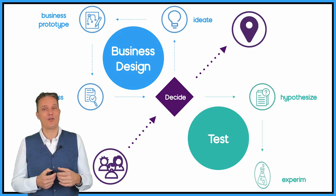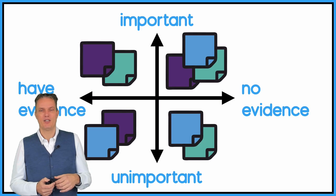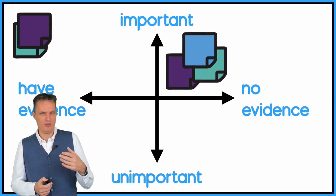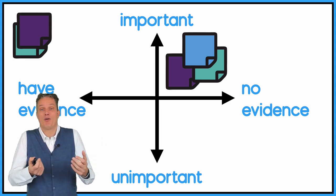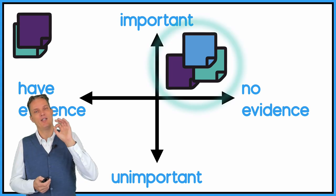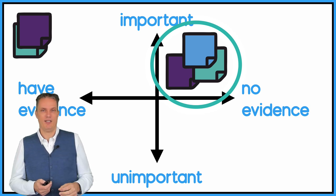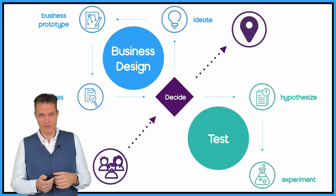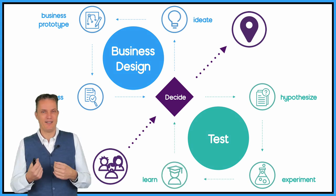And the next step is all about running the experiments. So where do you start with your experiments? Well you don't start with the unimportant stuff. So you don't do experiments for that. You don't need to do experiments with the important stuff which you already have evidence for. So you start with the stuff which is important, the assumptions which are important, and you don't have any evidence for it. And in the book there are 44 examples of experiments you can use. And you should learn from that. Gather data from it.